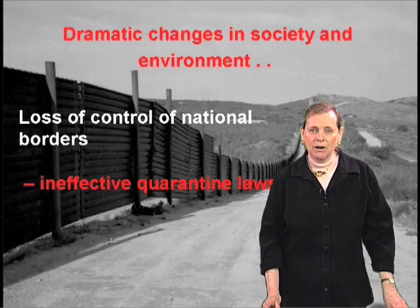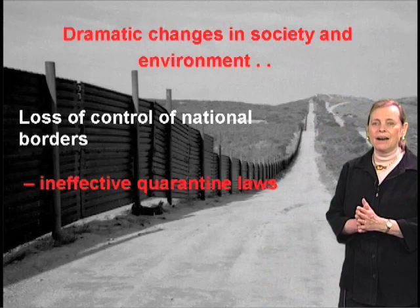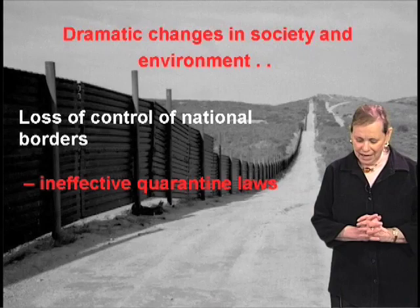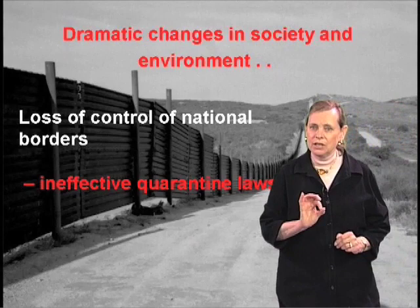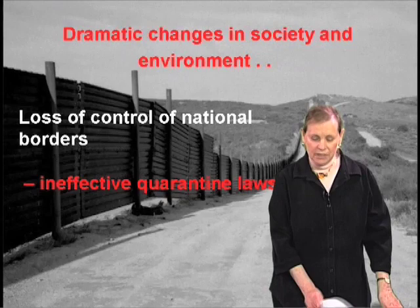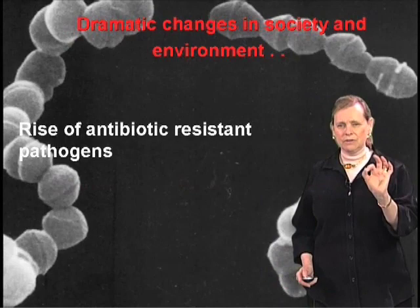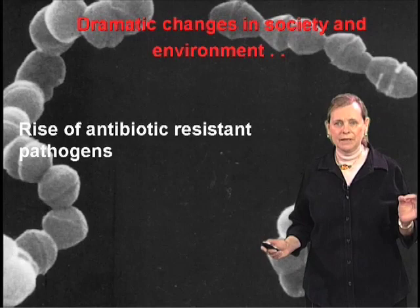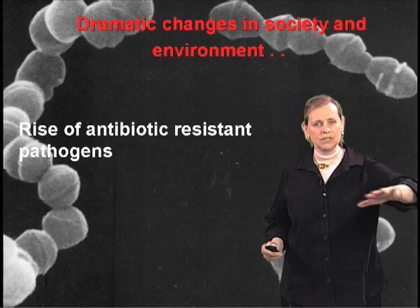Another problem, of course, is the loss of control of our national borders — we're really not very good at carrying out our quarantine laws. Effective quarantine laws are often the only thing we're going to use to protect ourselves in many diseases. Every one of these issues is being worked on and understood by many countries, coordinated by the World Health Organization. The final issue that is almost making where we live now a perfect storm is that while we have increased globalization, increased population, increased urbanization, and the migration of pathogens into new ecological niches, we have the rise of antibiotic-resistant pathogens.